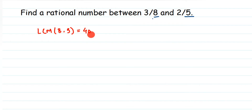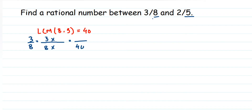Here I have 3/8. We are going to find the equivalent rational number with denominator 40. We can get the equivalent rational number by multiplying. So we are going to multiply 8 by a number such that we get 40 in the denominator. That number is 5, since 8 times 5 is 40. So multiply 5 in the denominator and also in the numerator — you cannot just change the denominator. So 3 times 5 is 15, and we get 15/40.